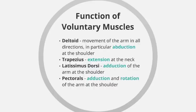The trapezius is responsible for extension of the neck — this would be the head moving in a backwards direction. A good example of this would be flicking the ball on with a header during a football game.